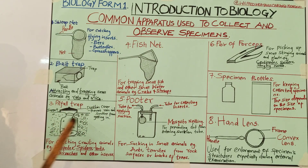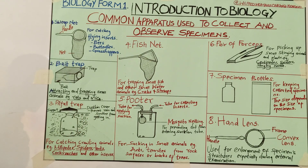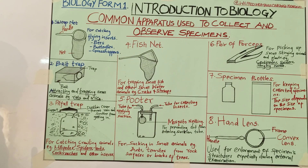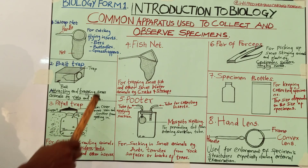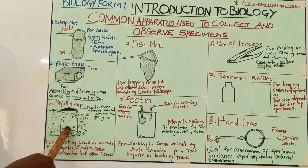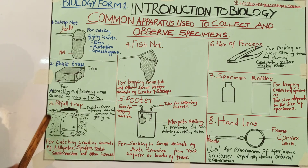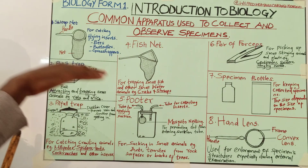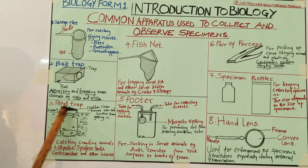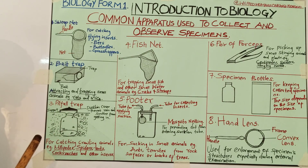The function of the dustbin cover is to prevent rain and sunshine from getting in. Maybe you have just left this pitfall trap and you are waiting for specimens to enter. If rain comes and water flows into the apparatus, it will be difficult to collect specimens. The dustbin cover prevents rain from entering. Too much sunshine may also kill the specimens.